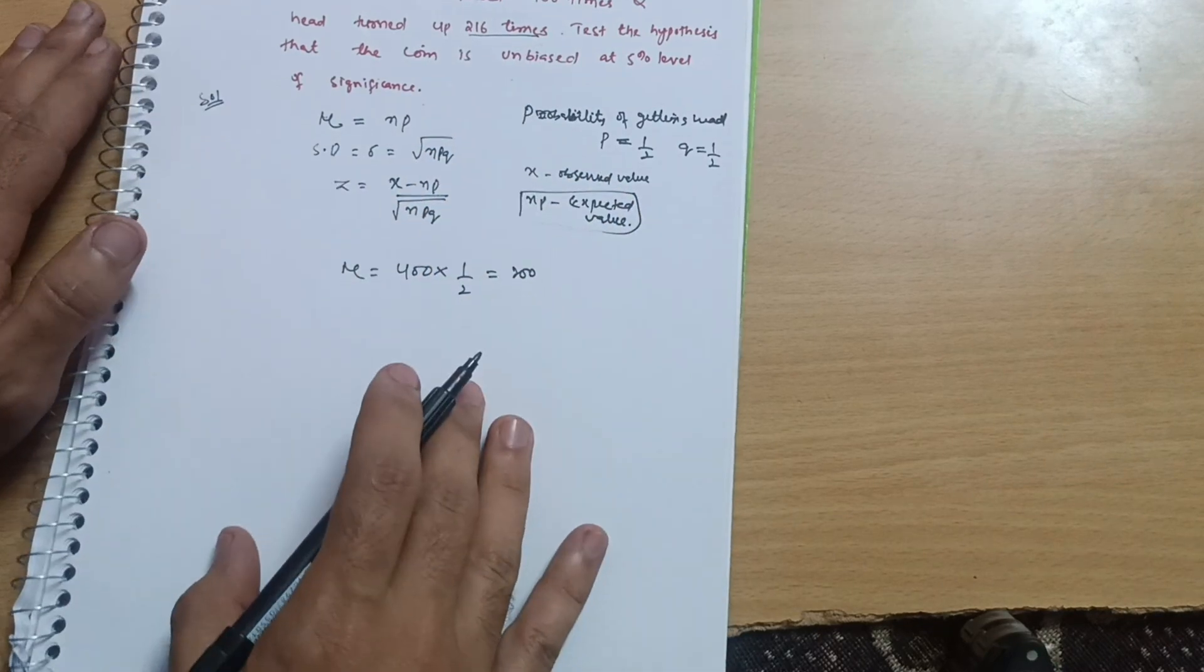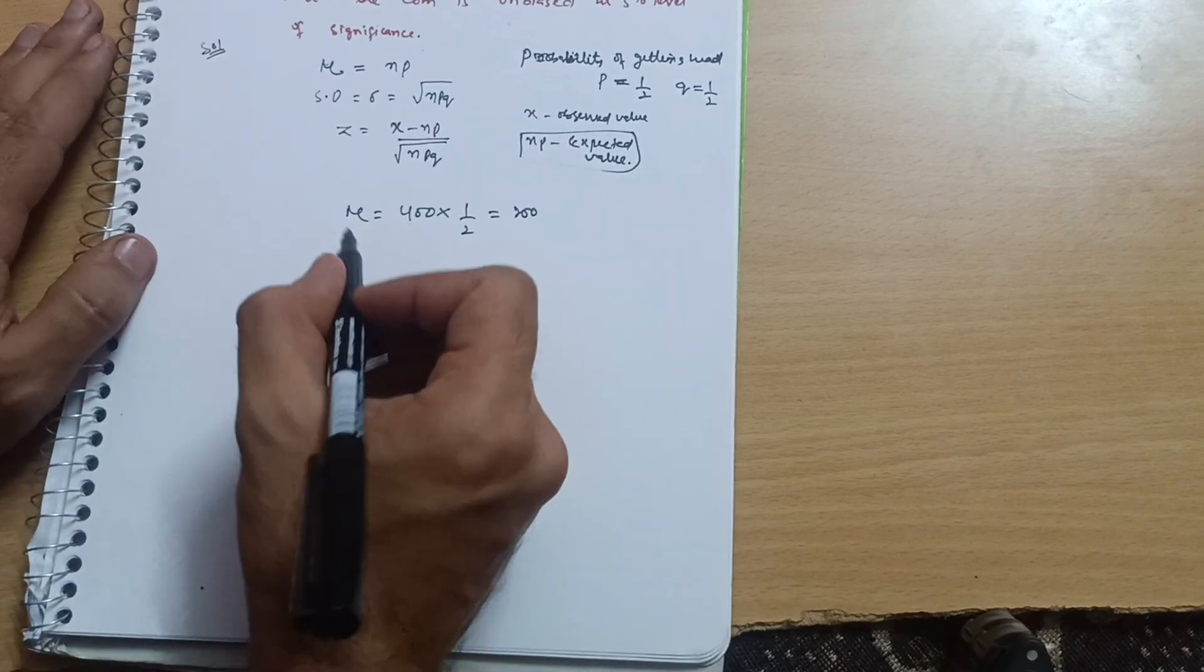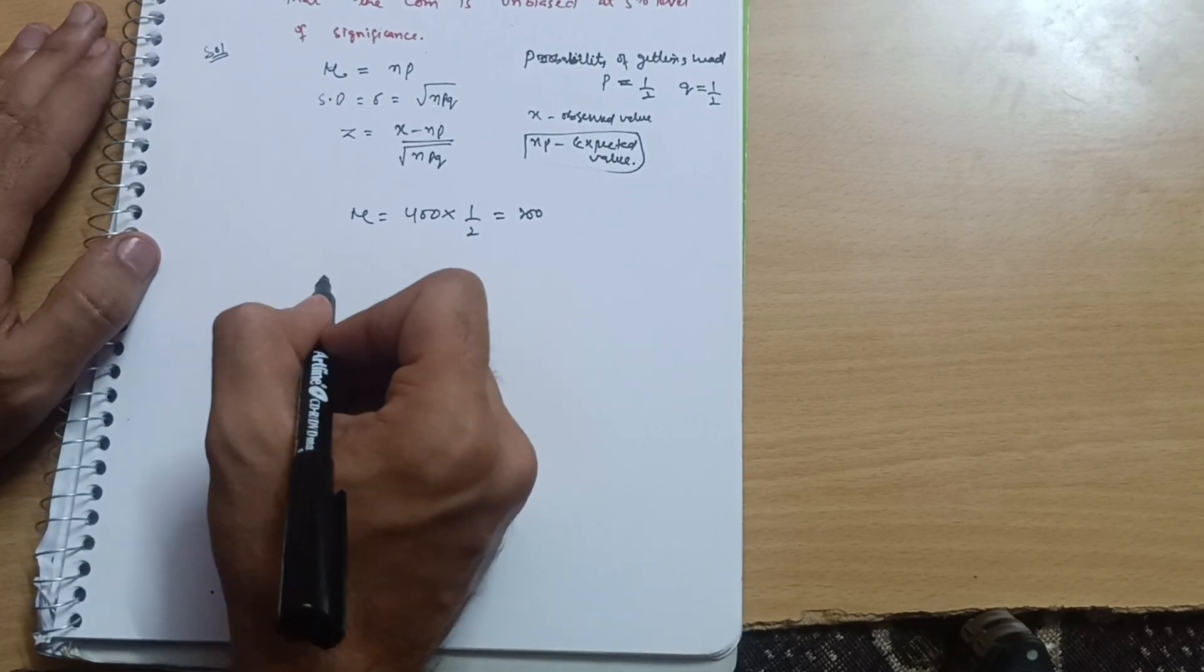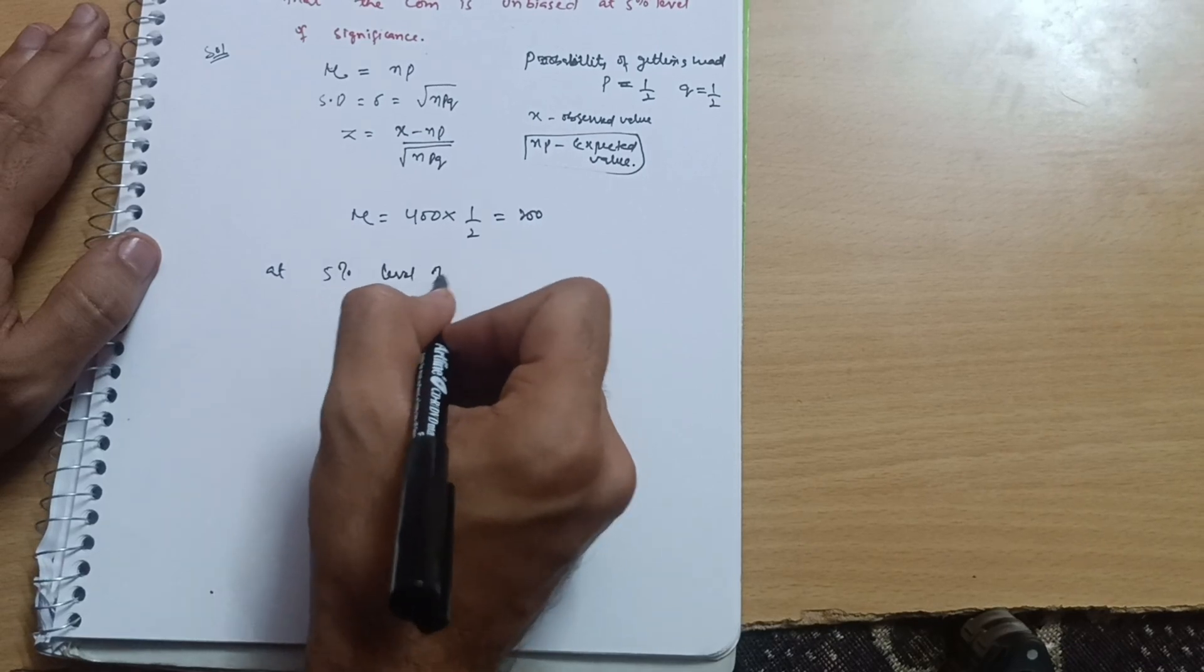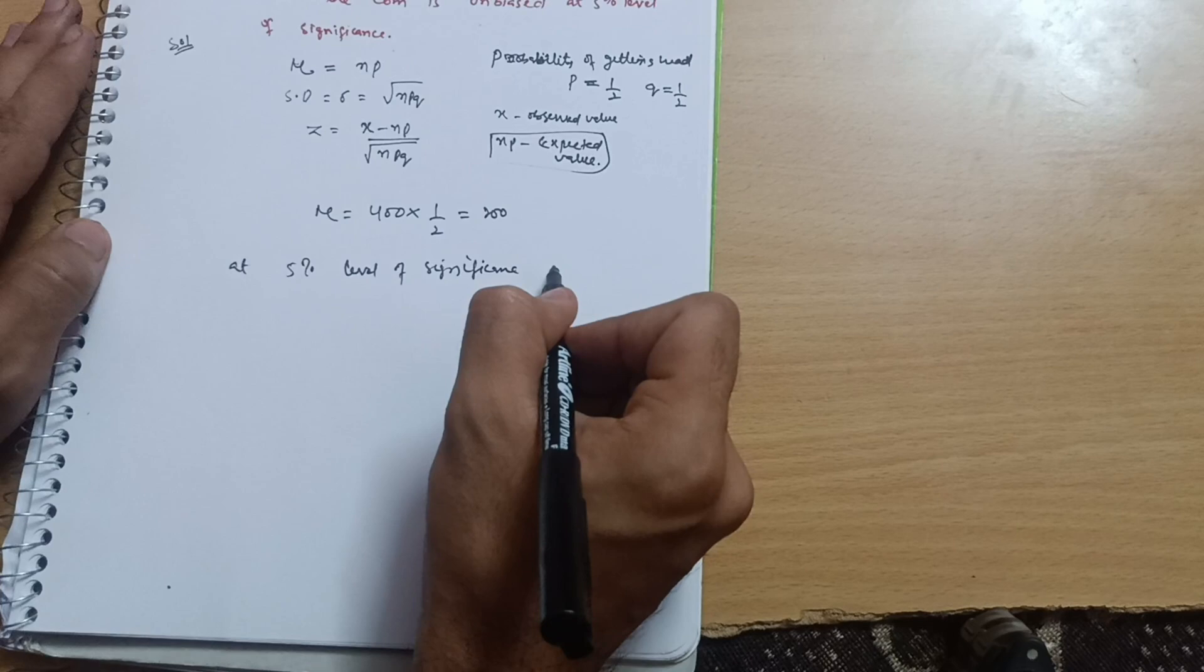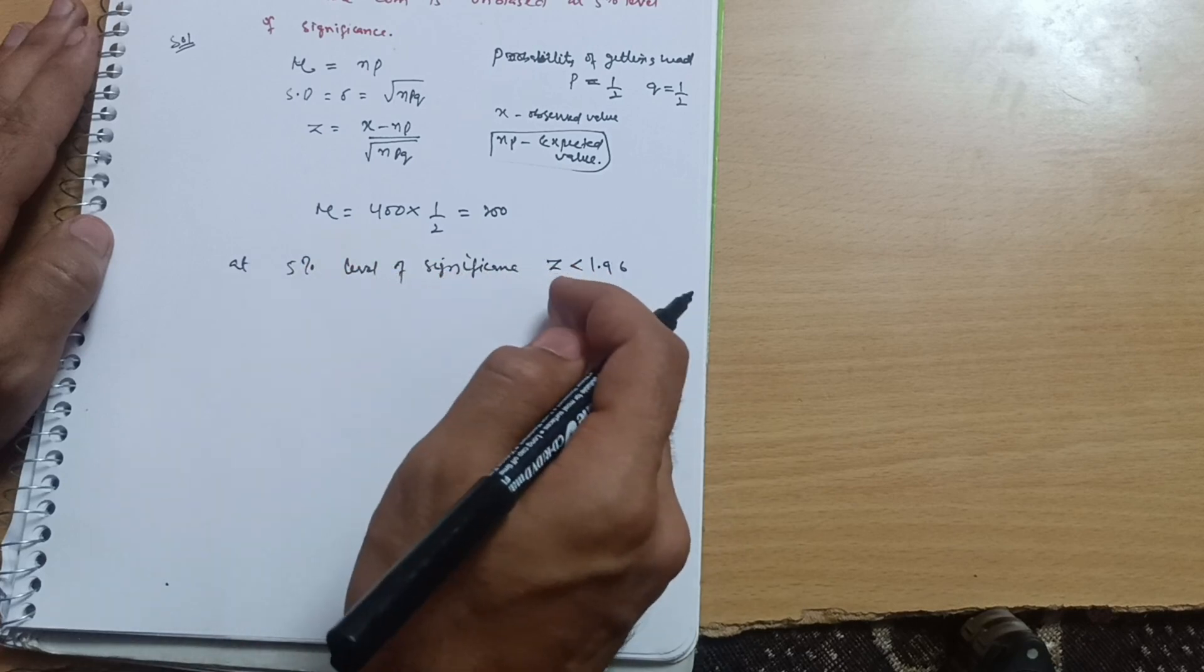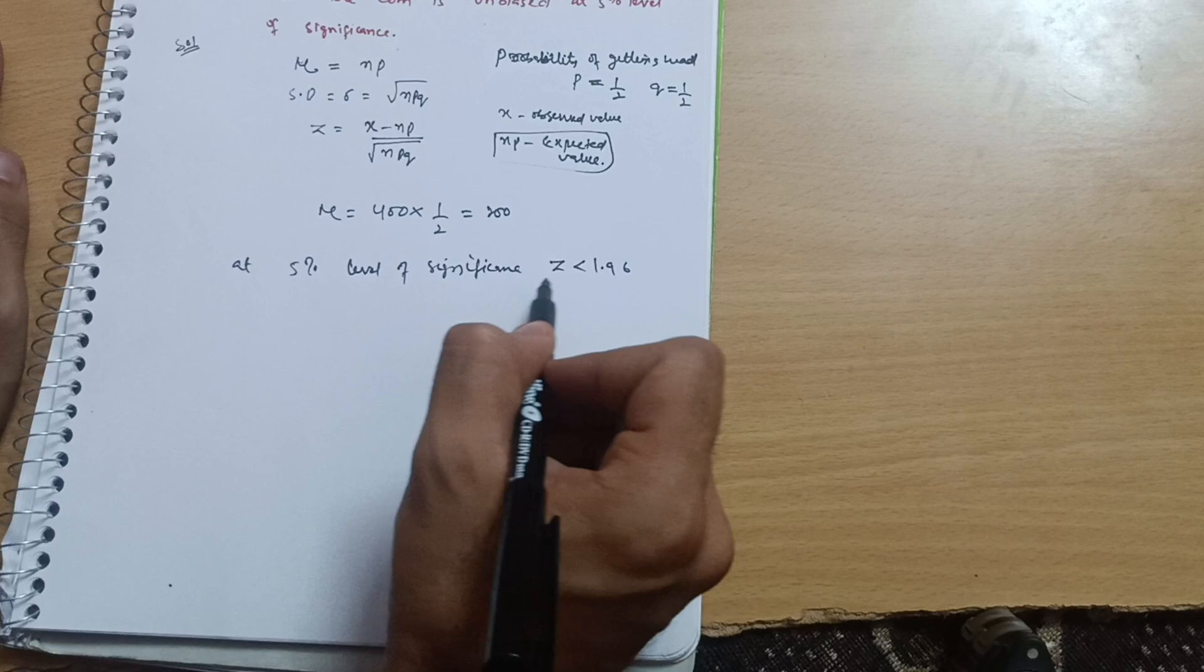Now we have to check exactly if the coin is biased or unbiased by putting the values in the formula Z equals X minus NP. Before going to the calculation you should remember that there is a standard tabulated value for the 5% level of significance. At 5% level of significance, Z should be less than 1.96. At 1% level of significance, Z should be less than 2.58. Here we are dealing with the 5% level of significance so it should be less than 1.96, then our hypothesis is accepted.